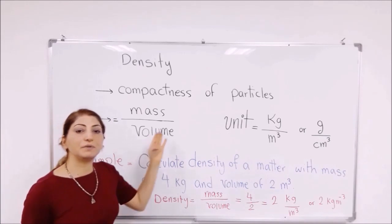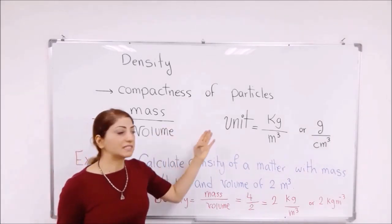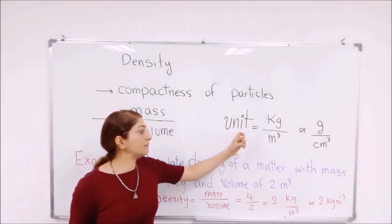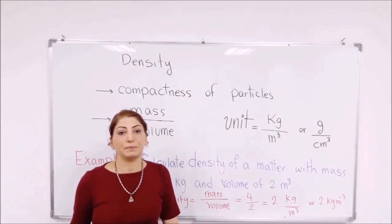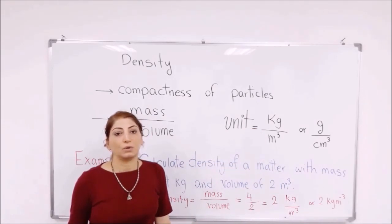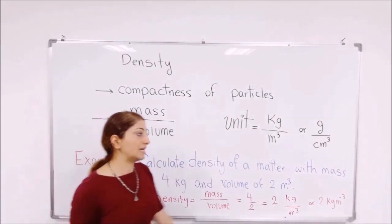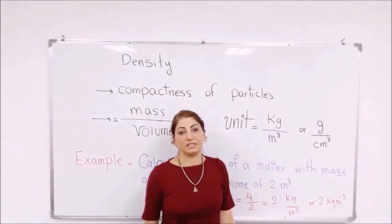What is the unit of density? The unit of density can be kilogram per meter cubed, or it can be expressed as gram per centimeter cubed.